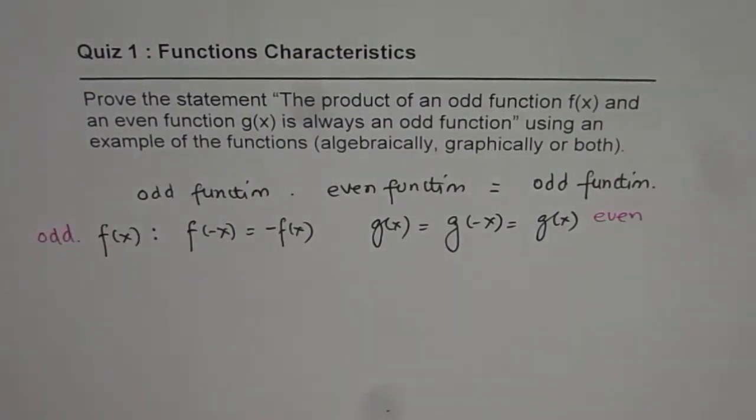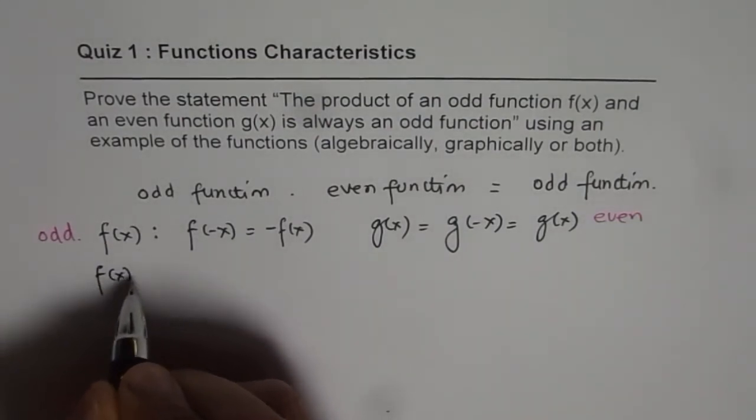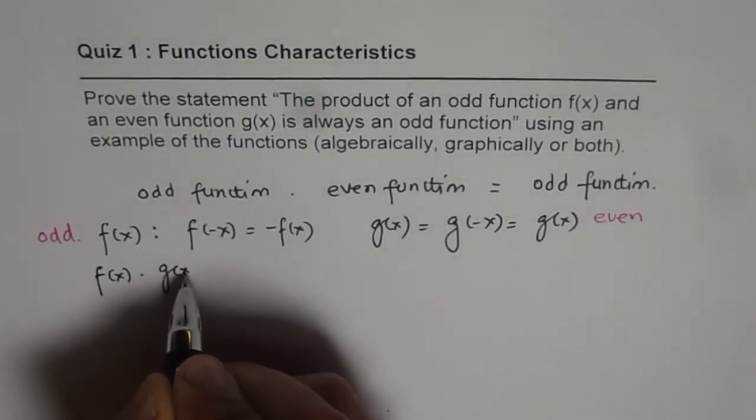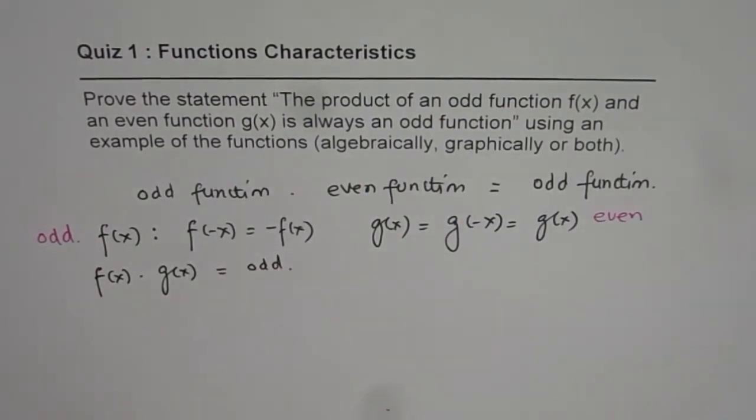Now, what we need to prove is f(x) times g(x) is actually odd. This is what we have to prove. So let's take some examples.